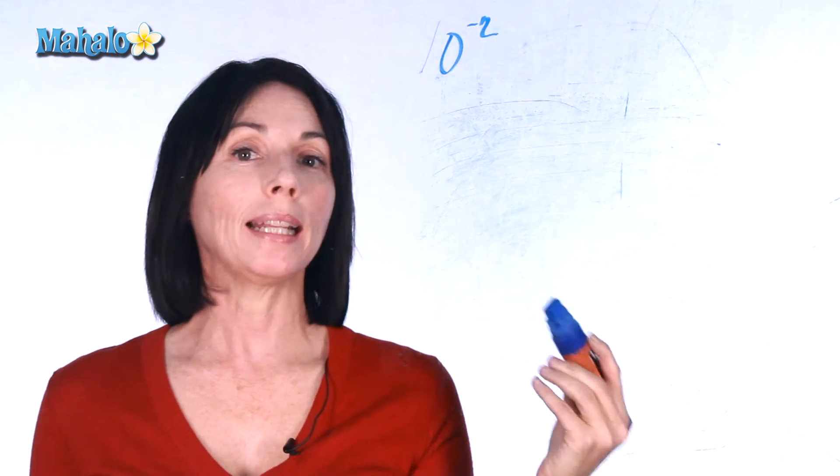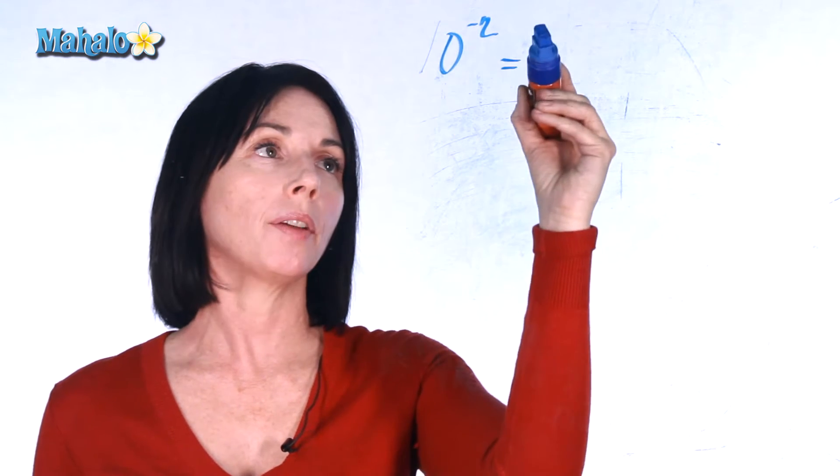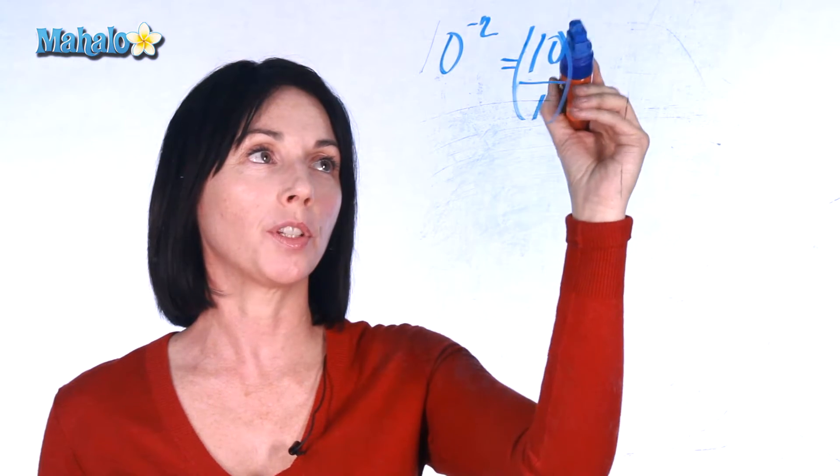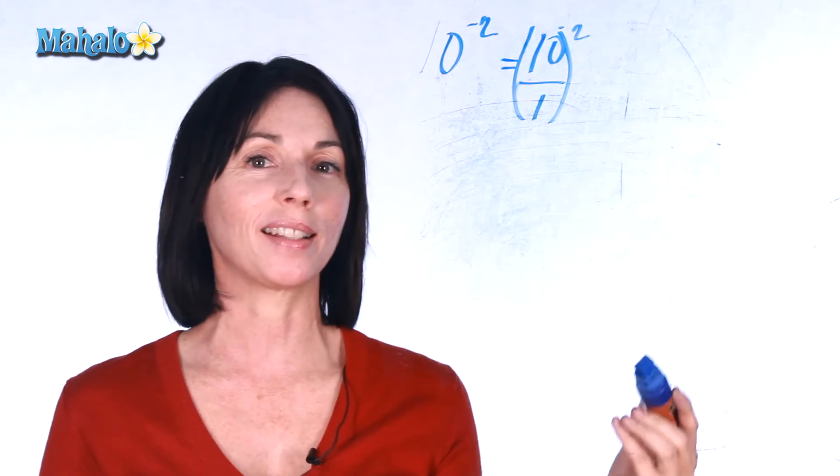Now we can write 10 as 10 over 1. So what we really have here is 10 over 1 to the power of negative 2. Putting parentheses around it just means the whole thing is raised to that power.